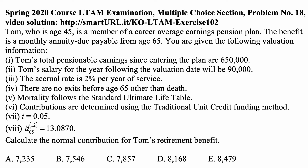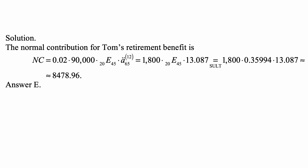Calculate the normal contribution for Tom's retirement benefit. Here's a solution. Under the traditional unit credit method, it's this year's salary — 2% of it — that is earned for service this year. And it will be paid in the form of a life benefit at age 65 with a monthly annuity. This is the annual rate that is accrued.